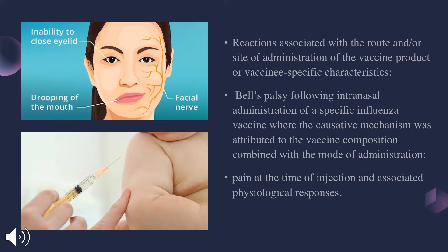Sometimes they may be life-threatening allergic reactions. AEFIs may be associated with the route of administration or product characteristics. One example is Bell's palsy, a condition which develops when the influenza vaccine is given by the intranasal route — the mechanism and composition of the vaccine together cause Bell's palsy. Bell's palsy is a condition where facial nerves are not working properly, resulting in drooping of the mouth and inability to close the eyelids. Administering the vaccine by injection may also cause pain at the injection site and a physiological response.